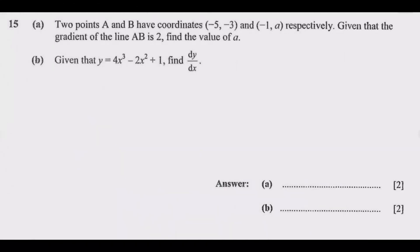Let us look at question 15. Question 15(a) reads: Two points A and B have coordinates (-5, -3) and (-1, a) respectively. Given that the gradient of line AB is 2, find the value of a. Part (b): Given that y = 4x³ - 2x² + 1, find dy/dx.